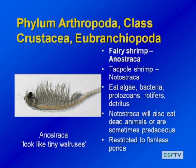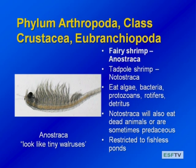In some fishless lakes we get fairy shrimp. In small ponds and vernal pools in the region you might find fairy shrimp, Anostraca, and in some regions also tadpole shrimp, Notostraca. These are in fishless ponds — you can think about why: they're pretty big, pretty visible, and pretty slow. They eat algae, bacteria, protozoans, and other zooplankton like rotifers. Notostraca will also eat dead animals and can sometimes be predaceous — but only in those fishless ponds.